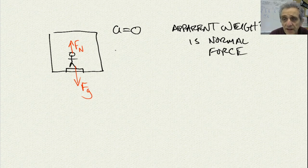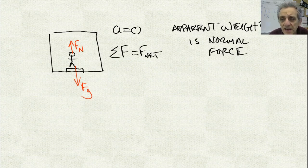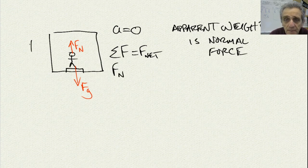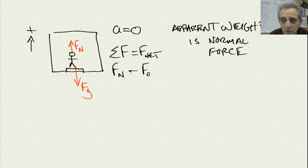Now, if I write down summation of my forces is equal to F net, I have two forces on the person. The normal force is up, because I'm going to say up is positive. And then I'm going to add a negative Fg, which is like subtracting Fg. And that's going to equal MA, because F net equals MA.